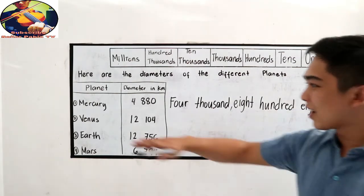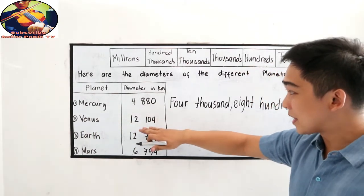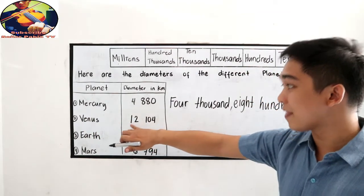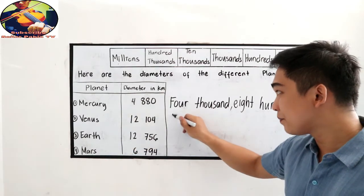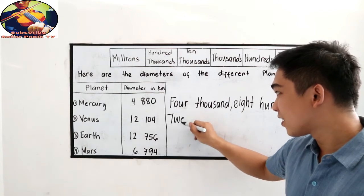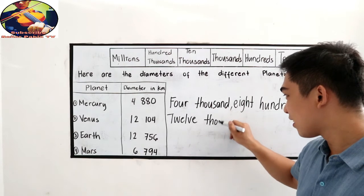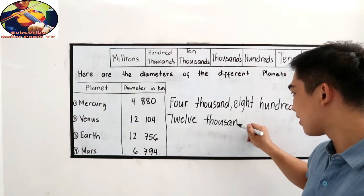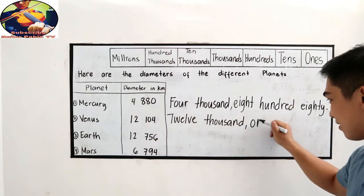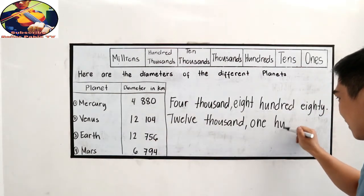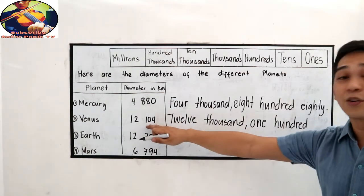Next, how about Venus? The place value is ones, tens, hundreds, thousands, ten thousands. So this will read as twelve thousand, one hundred four.